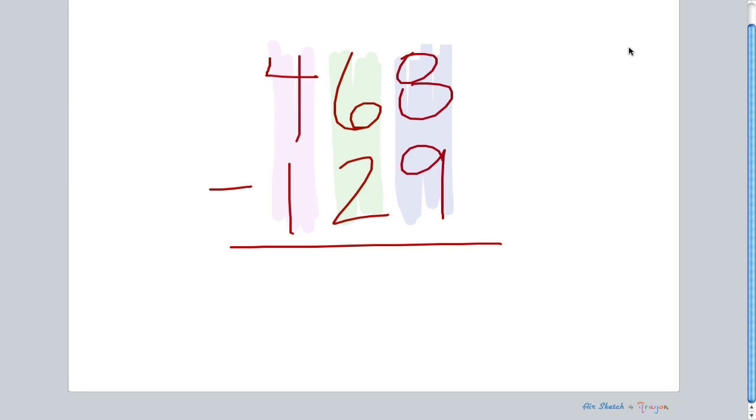I see already a problem in my 1's place. 9 is larger than 8, which means I need to borrow. I'm going to go next door to my 10's place, and I'm going to borrow a 10, which will leave 5 10's left in my 10's place. I'm going to give that 10 to my 1's place, which now leaves me 18.